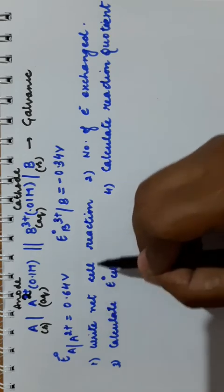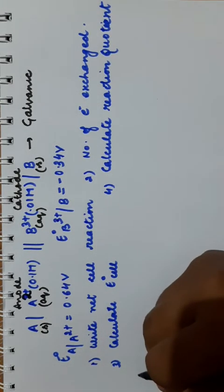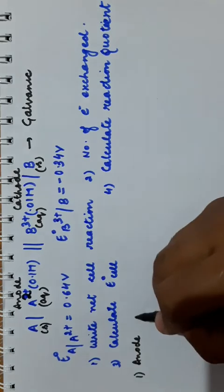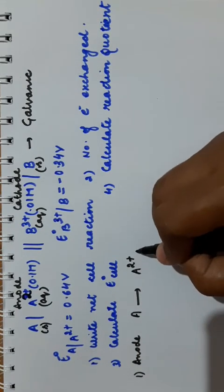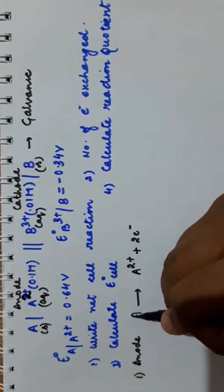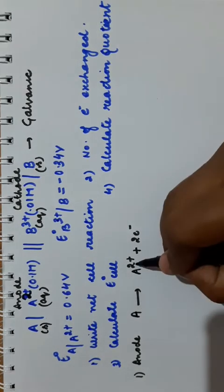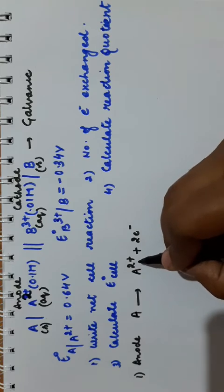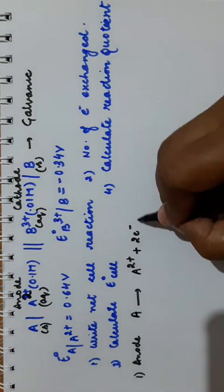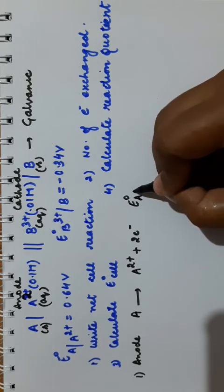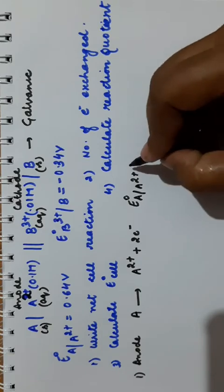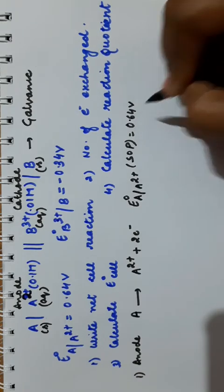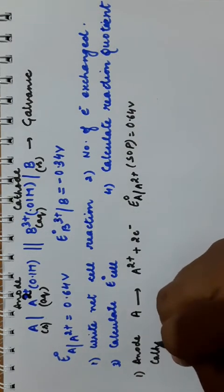First question: write the net cell reaction. To write the net cell reaction, you have to write the reactions at anode and cathode. At anode: A → A²⁺, meaning A has lost 2 electrons, oxidation number goes from 0 to +2 — that is an increase, so it undergoes oxidation. The standard oxidation potential E naught (A → A²⁺) is given as +0.64 volt.